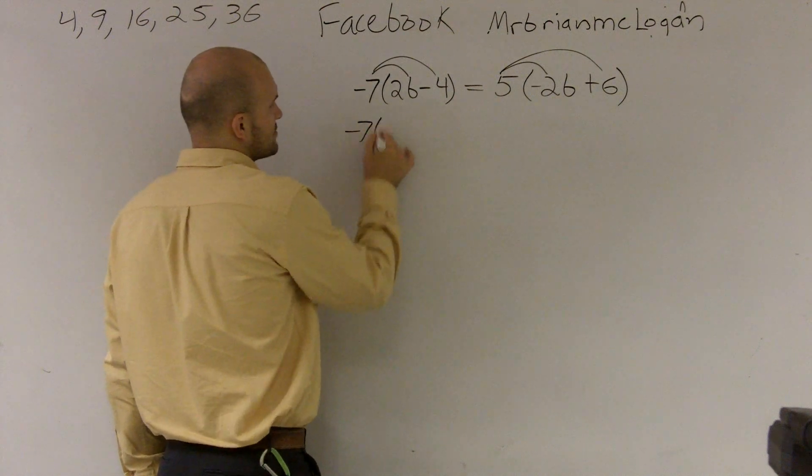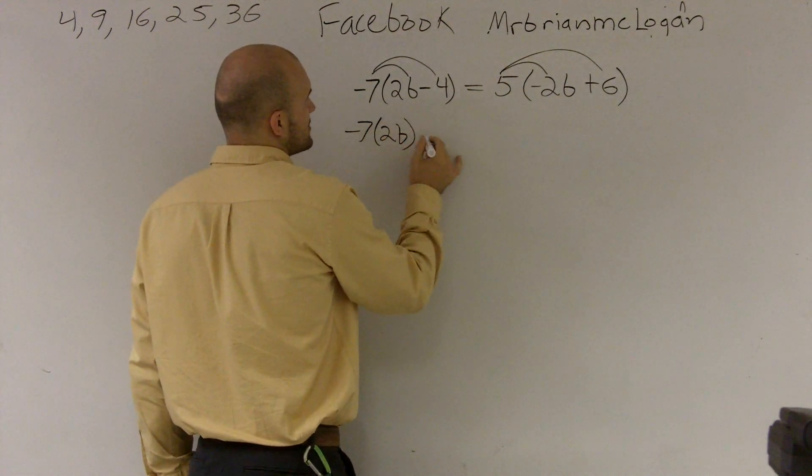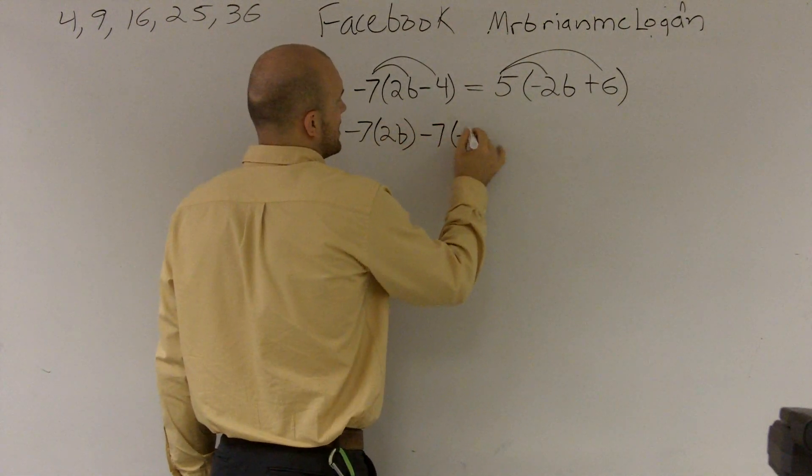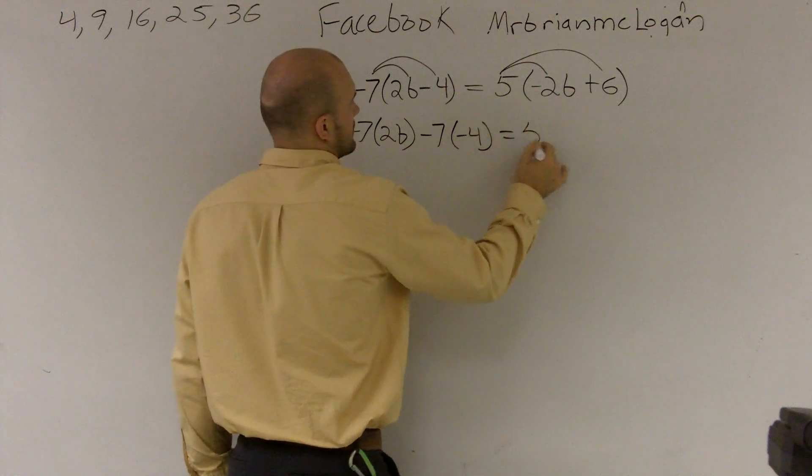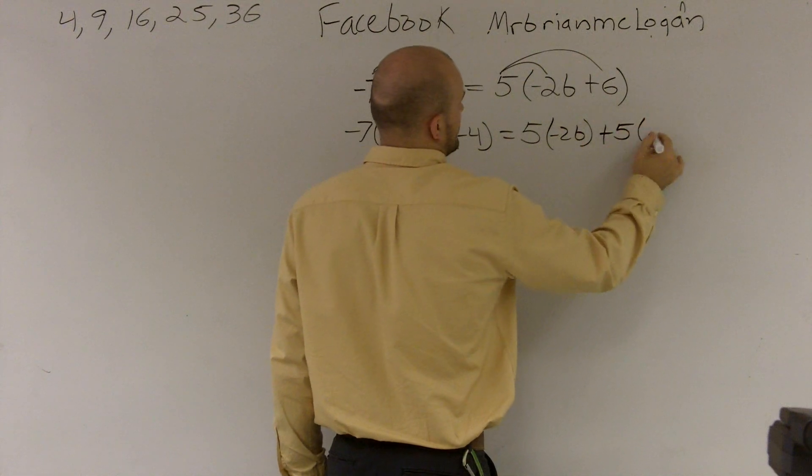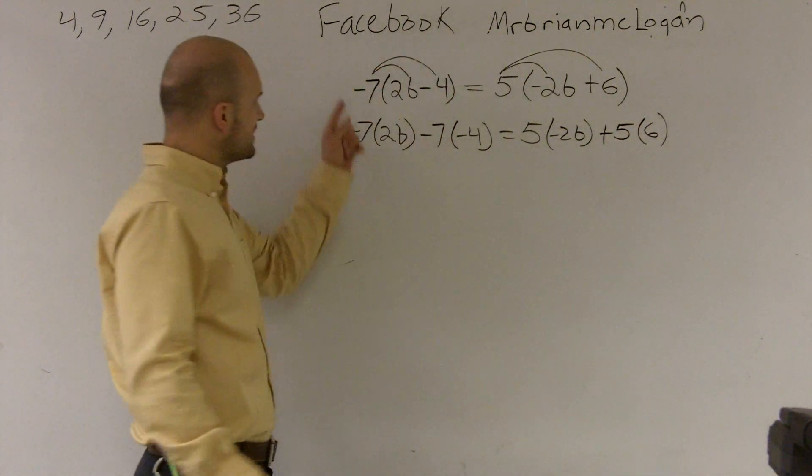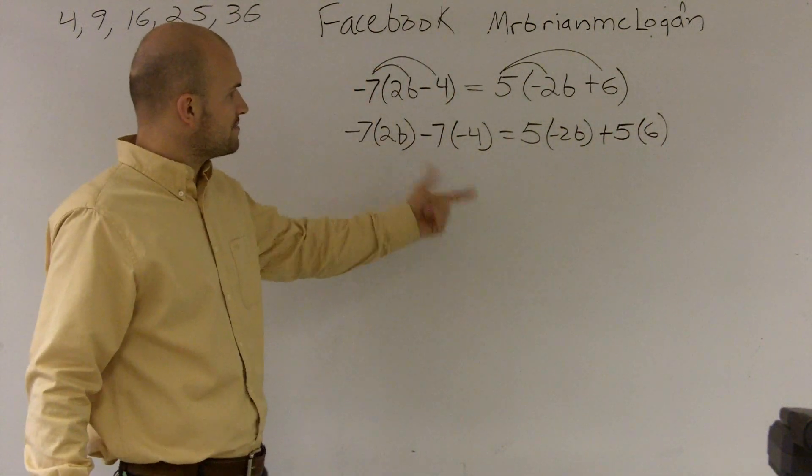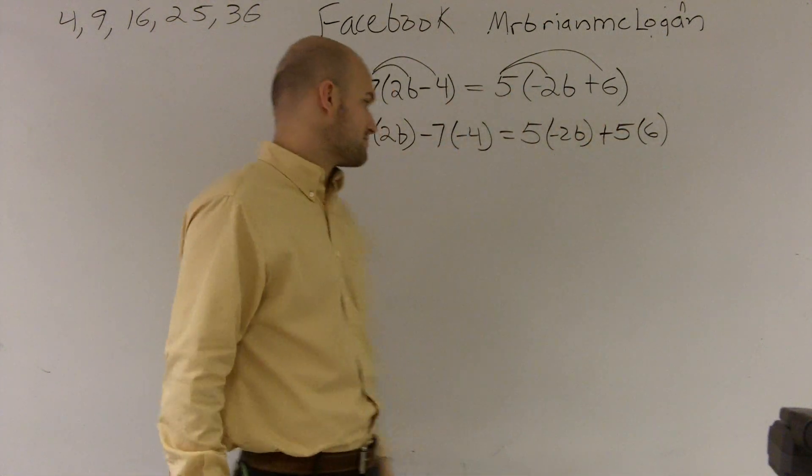I'm just going to write this out just so I make sure that everybody understands what I'm multiplying by. I'm multiplying the negative 7 times both of those terms and I'm multiplying the 5 times both of those terms.